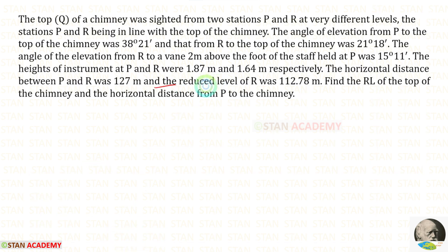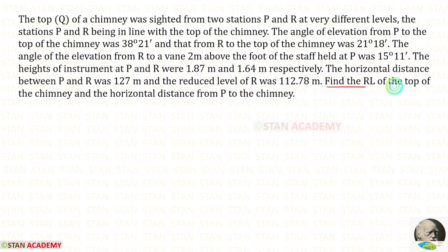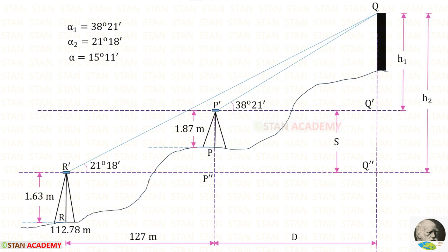The reduced level of R was 112.78 metres. No benchmark is given; only the reduced level at point R is given as 112.78 metres. We need to find the reduced level of the top of the chimney and the horizontal distance D from P to the chimney.